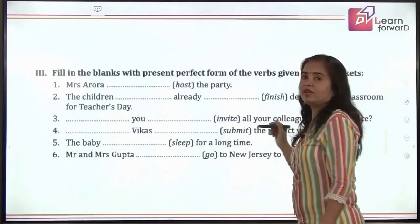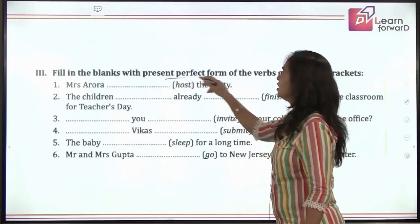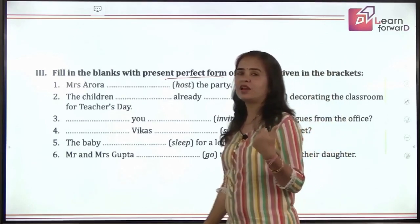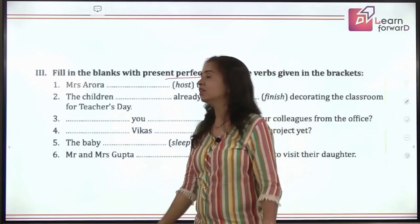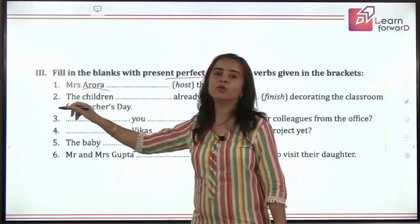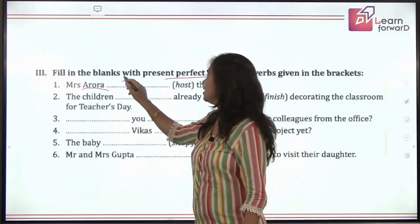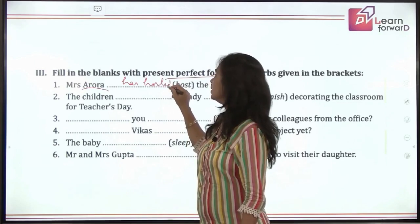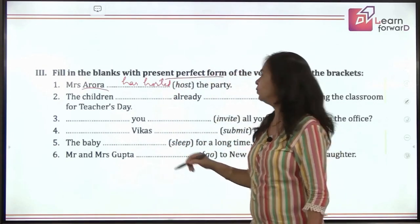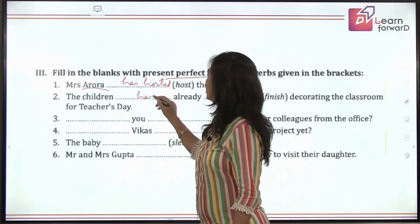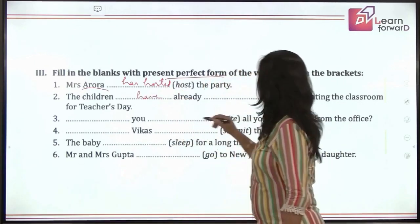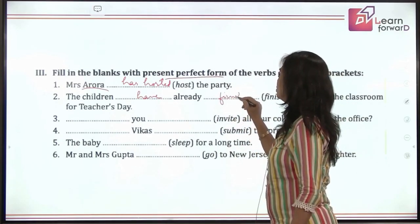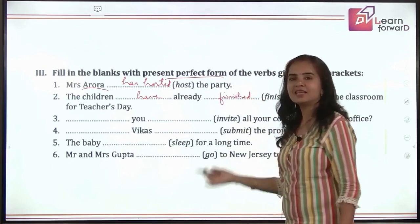Now we have an exercise: fill in the blanks with the present perfect form. It's simple — look at the subject, use 'has' or 'have,' and then the third form of verb. Mrs. Aurora is singular, so it's 'has hosted the party.' The children is plural, so 'have.' This is how you complete this exercise.